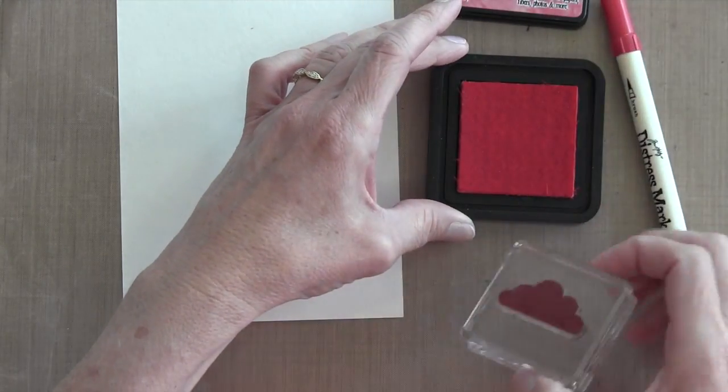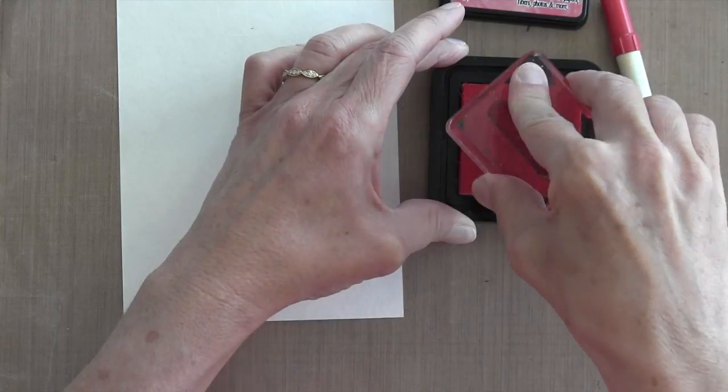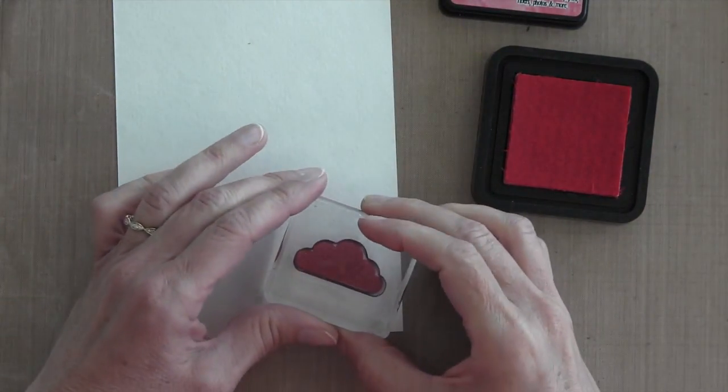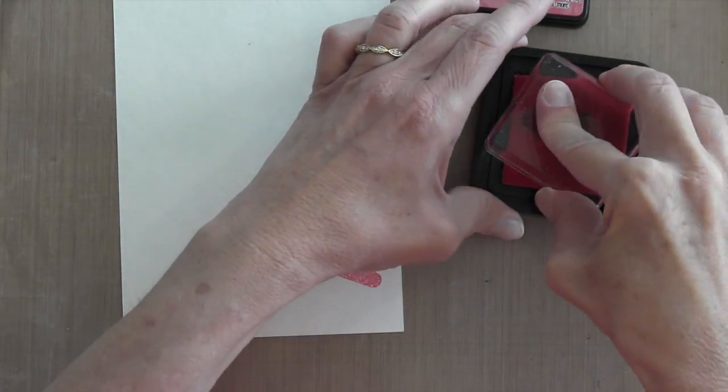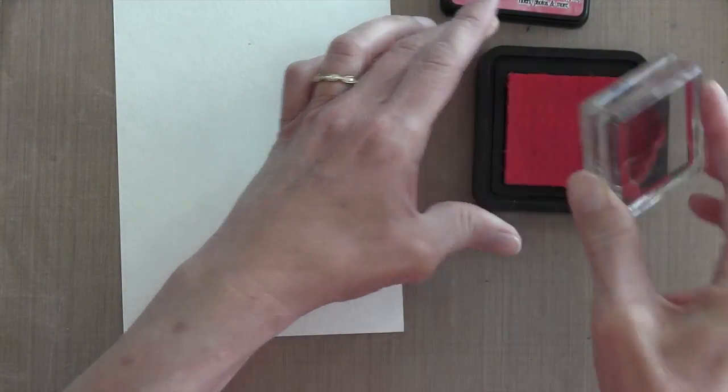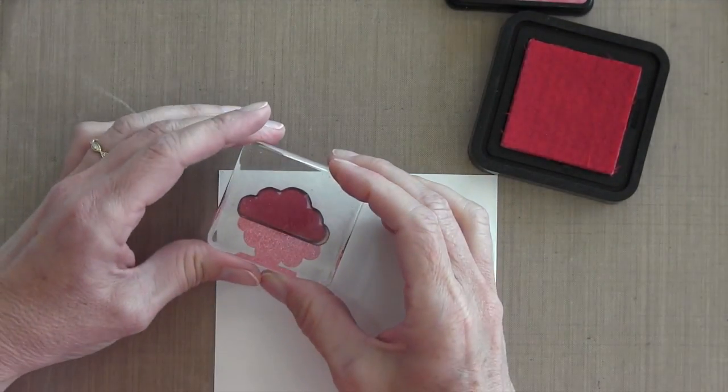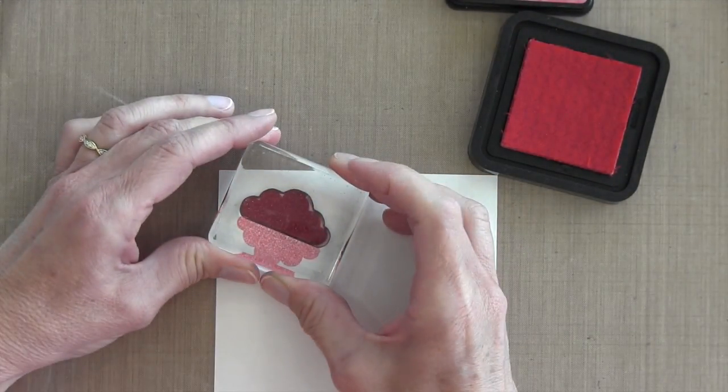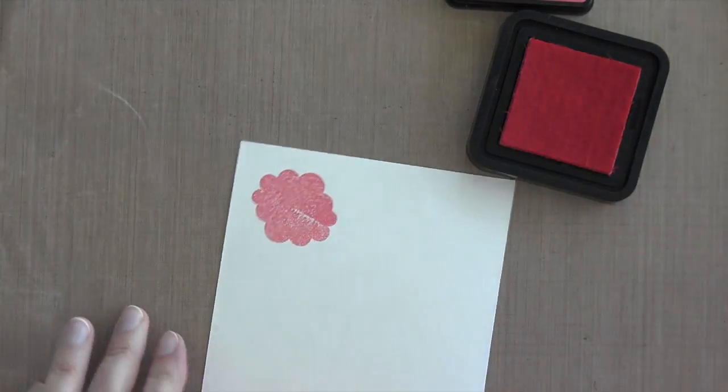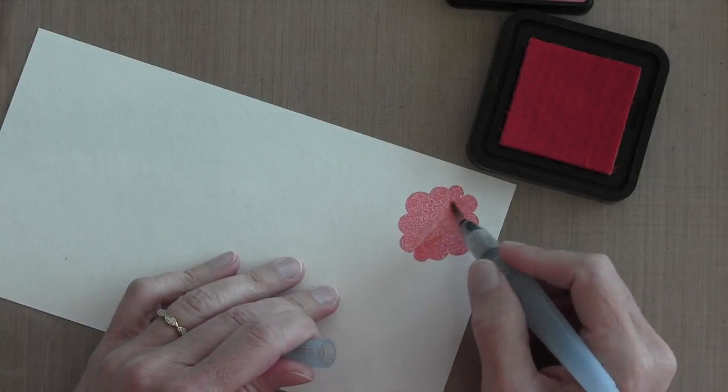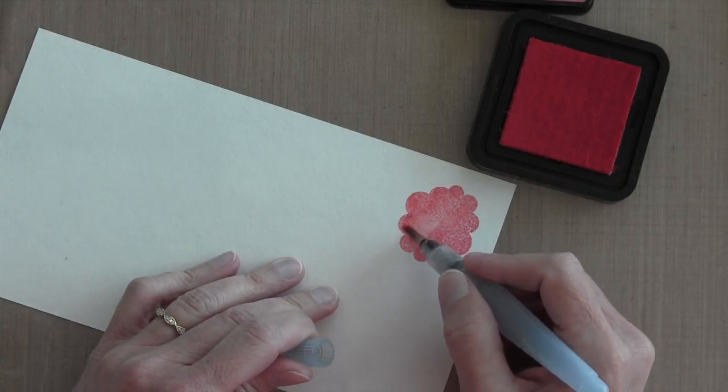I'm going to start by stamping my flowers. I have some Strathmore 90 pound watercolor paper and I'm going to ink up my cloud with the worn lipstick first and then stamp it down on my cardstock. Distressed inks aren't really made to be stamping inks, and plus with the texture of the paper you're not going to get that great of an impression. So I'm going to flip this over and stamp it again.